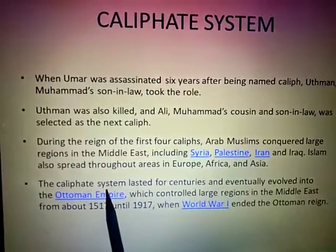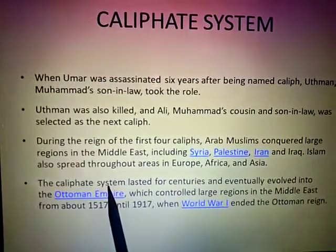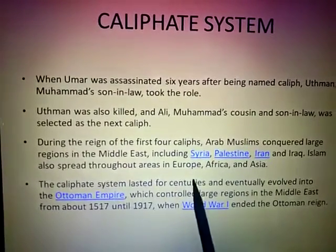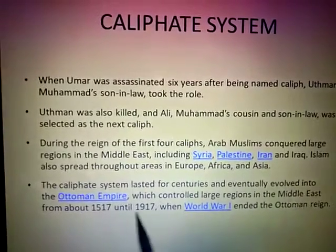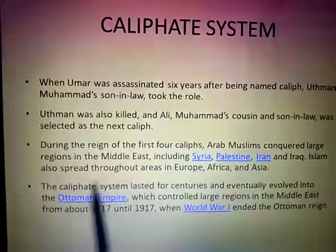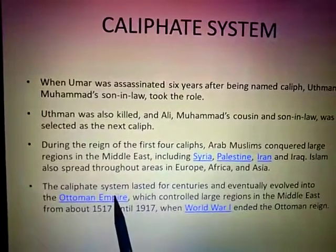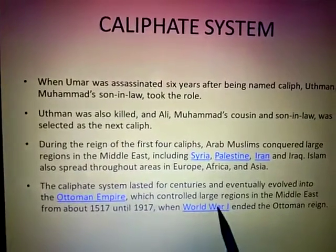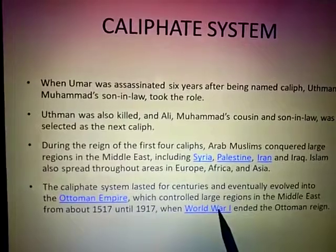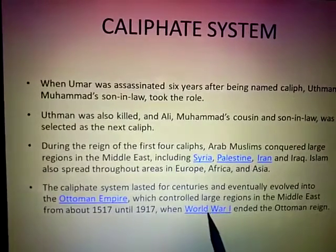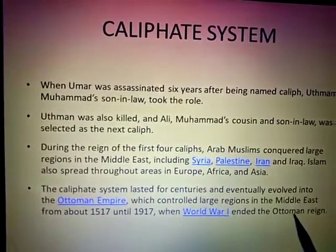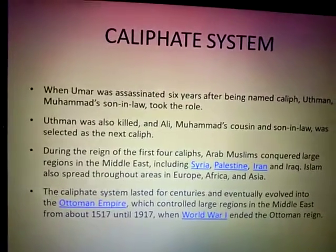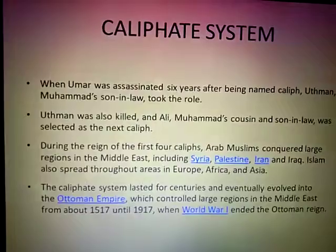The Caliphate system lasted for centuries and eventually evolved into the Ottoman Empire. With the end of World War I, the Ottoman Empire also finished.